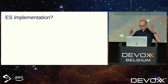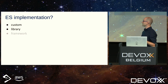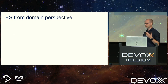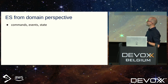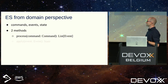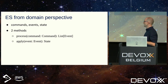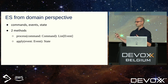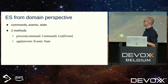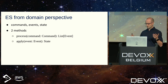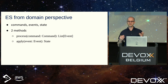We know what we want to implement — now the question is how. We have options: custom implementation, library, or framework. From a domain perspective, event sourcing is a quite trivial pattern with only three main building blocks: commands, events, state. You just need to implement two methods: process command and return a list of events, and apply event and return a new version of the state. Using fold-left with this method gives you the current version of the state. That's why many people suggest implementing event sourcing by yourself.